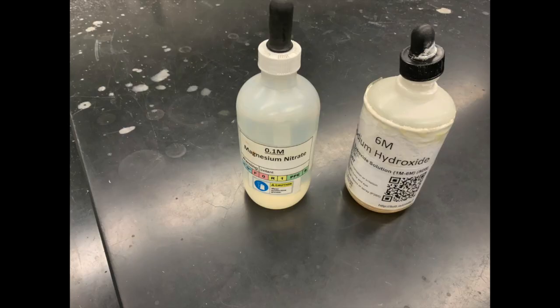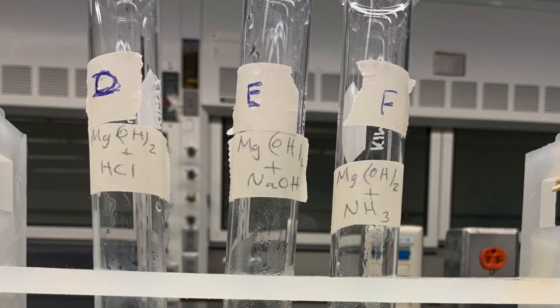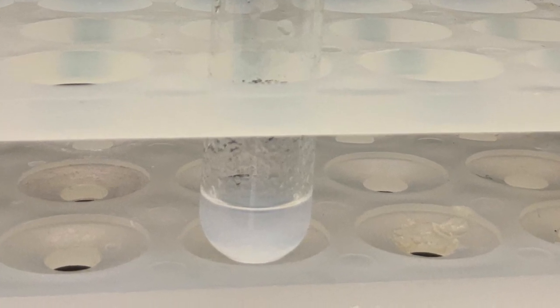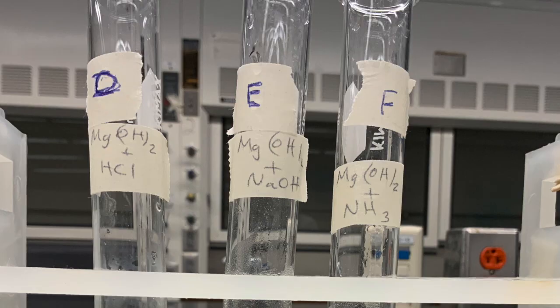Now we are going to repeat the experiment, but by mixing magnesium nitrate and 6 molar NaOH in 3 new test tubes labeled D, E, and F. Just like before, this is what we observed in the test tube at the start. Now we are going to arrange the 3 test tubes from left to right.